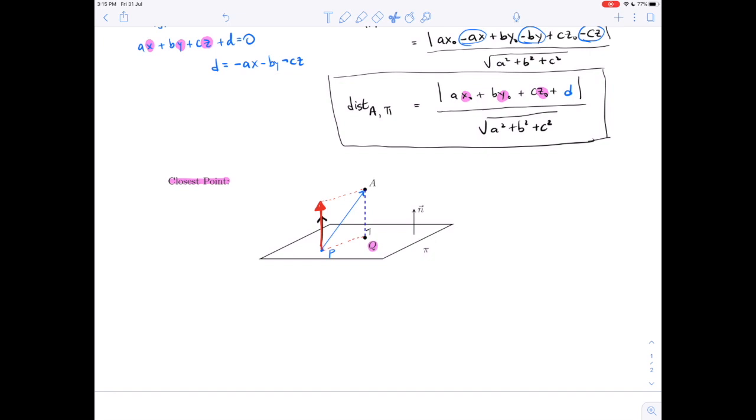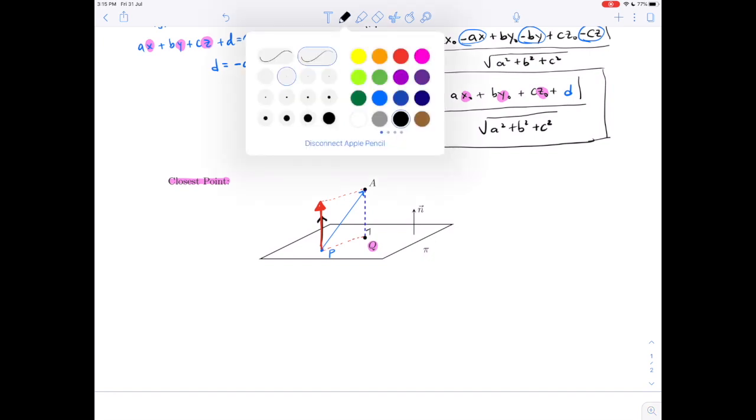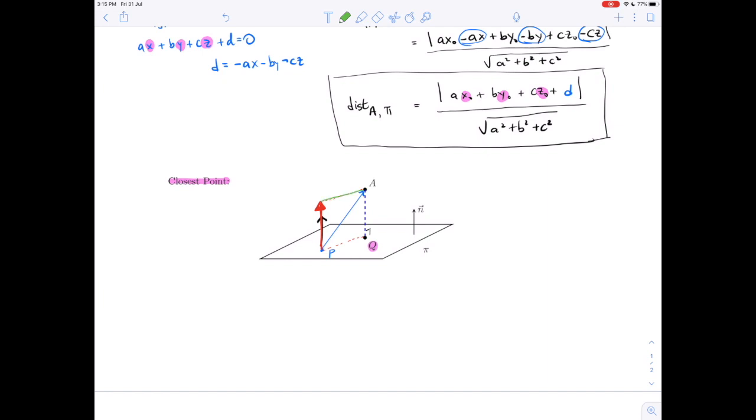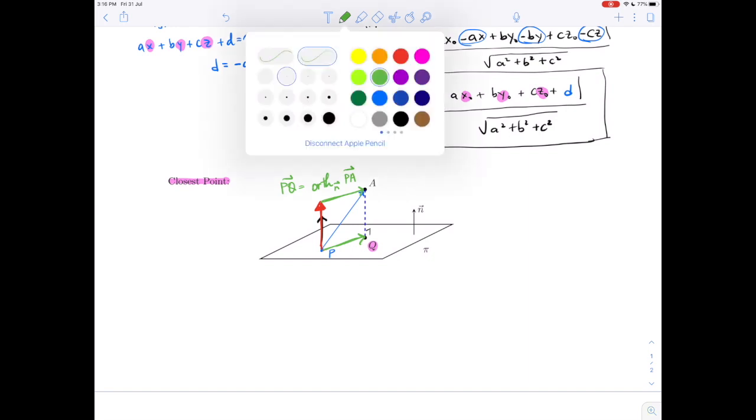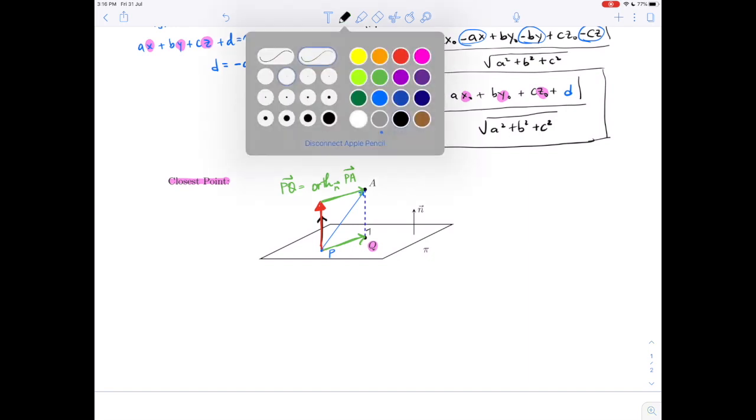If we take a look at our same diagram, our same point P that is chosen and our same projection, we want to find this point Q. There's a couple of ways of doing it given this diagram. The first is if I fill in the rest of the traditional projection picture, then this vector in green becomes the orthogonal component of PA relative to the normal vector, and that just so happens to be the vector PQ.